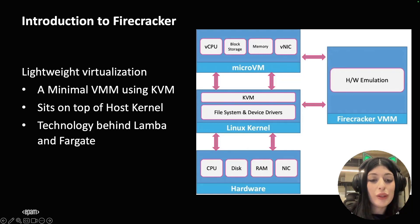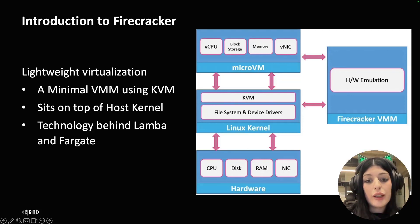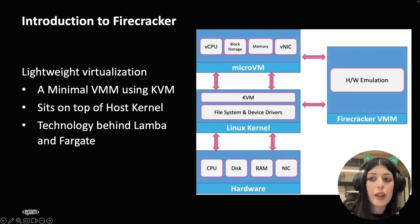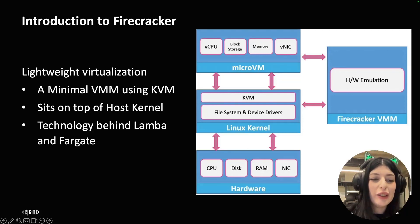Each Firecracker micro VM is further isolated with common Linux user space security barriers, and this companion program is actually called the jailer. The jailer provides a second line of defense in case the virtualization barrier is ever compromised.